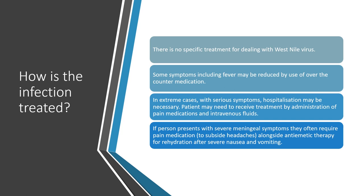How is the infection treated? There is no specific treatment. Some symptoms such as fever may be reduced by over-the-counter medication. In extreme cases with serious symptoms, hospitalisation may be necessary. Patients may need to receive pain medications and intravenous fluids. If a person presents with severe meningeal symptoms, they often require pain medication to alleviate headaches alongside antiemetic therapy for rehydration after severe nausea and vomiting.